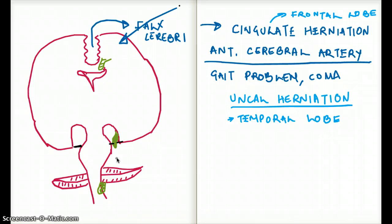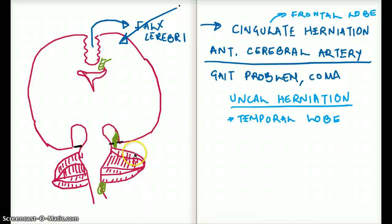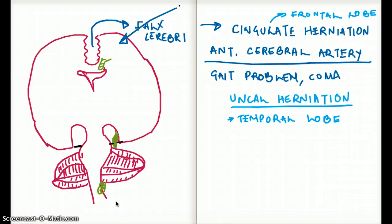The tentorium cerebelli is a structure that separates the cerebral hemisphere and the cerebellum. So this is the cerebral hemisphere, this is the cerebellum, and the temporal lobe — or the uncus — can herniate through this structure called the tentorium cerebelli, which is supposed to separate the two. When uncal herniation happens, it passes through the tentorium cerebelli.